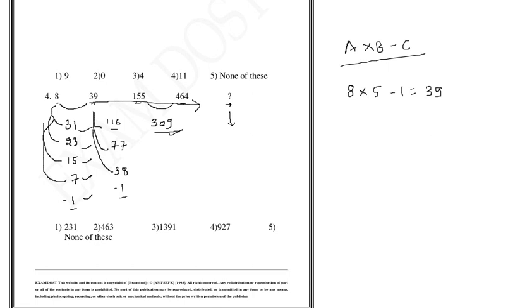So, 309 minus 155 is 154 and 154 or 155 minus, so you will get minus 1. So again, the value of C is minus 1. Here also it is minus 1 and here also it is minus 1. So, there is a similarity and putting it 8 times 5 minus 1 is 39.